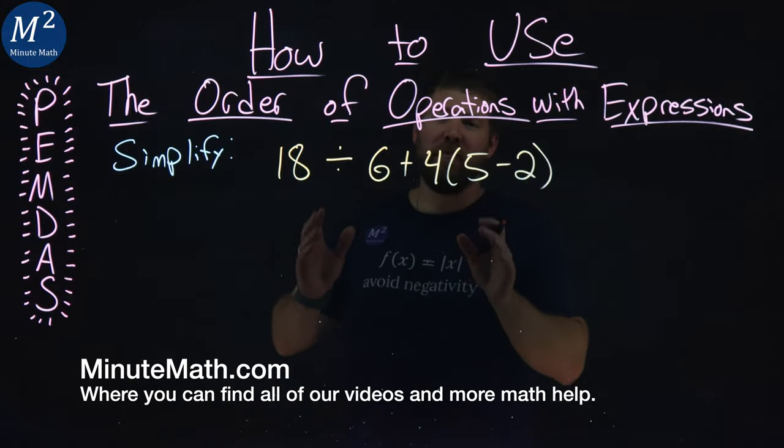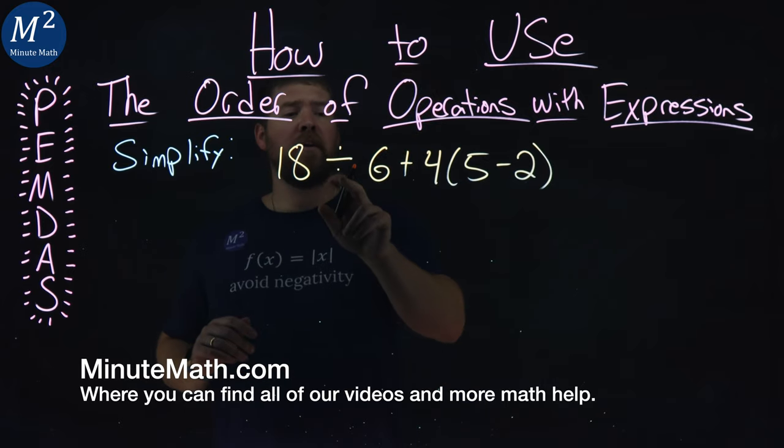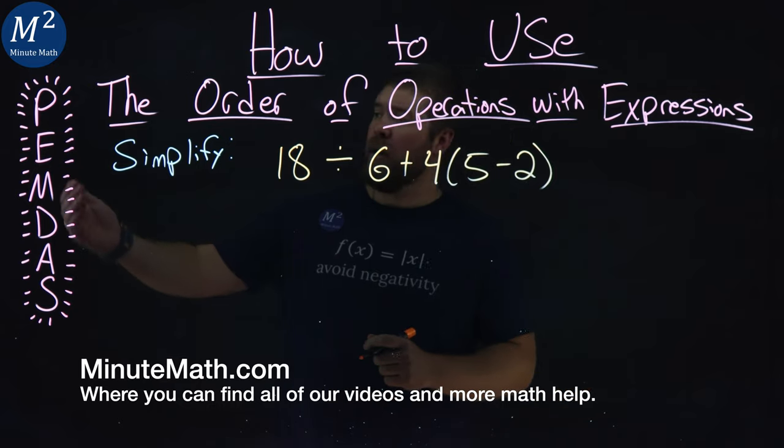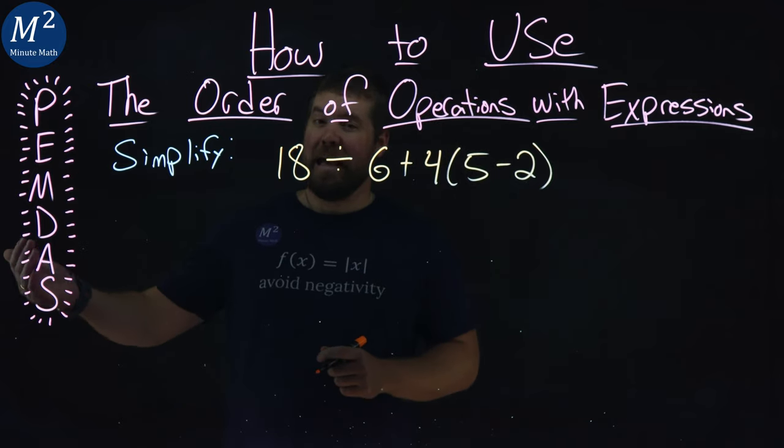We need to simplify this expression. 18 divided by 6 plus 4 times in parentheses 5 minus 2, and we're going to use the order of operations, aka PEMDAS.